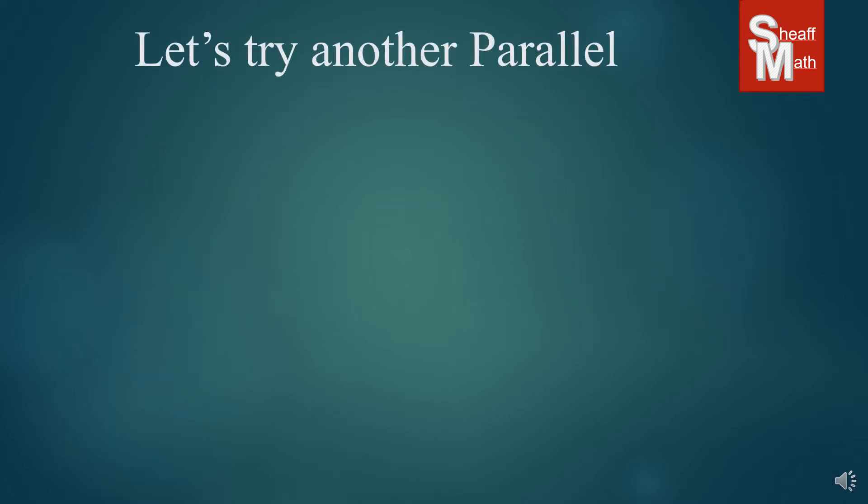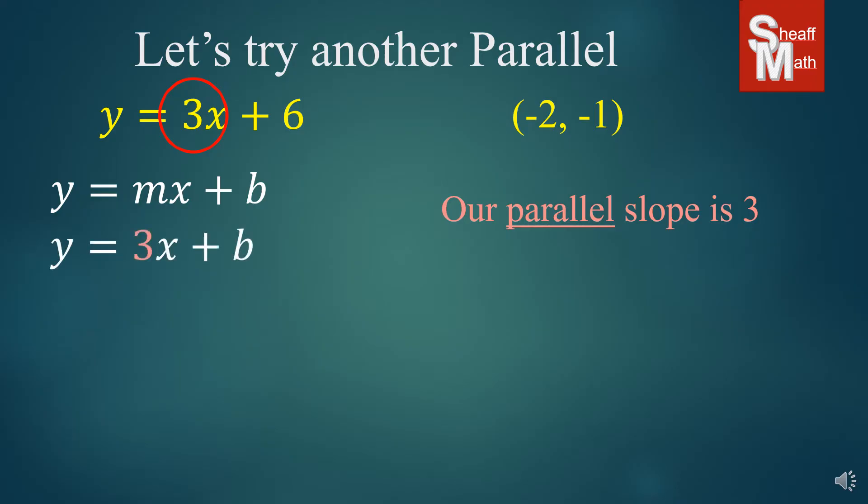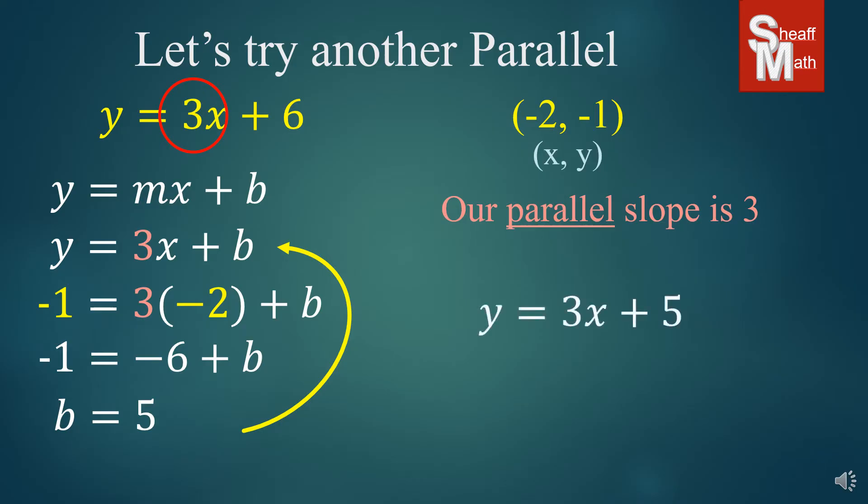Let's try another parallel. We have y equals 3x plus 6 and negative 2, negative 1. So our parallel slope is 3 because that's the slope of the first one. Parallel slopes are equal. We start off with our generic equation again. We put the 3 in for the m. We're going to put our negative 2 and negative 1 in for the x and the y. We're going to simplify and solve for b. And b equals 5. We put that 5 back into the missing b, and we have our answer, y equals 3x plus 5.